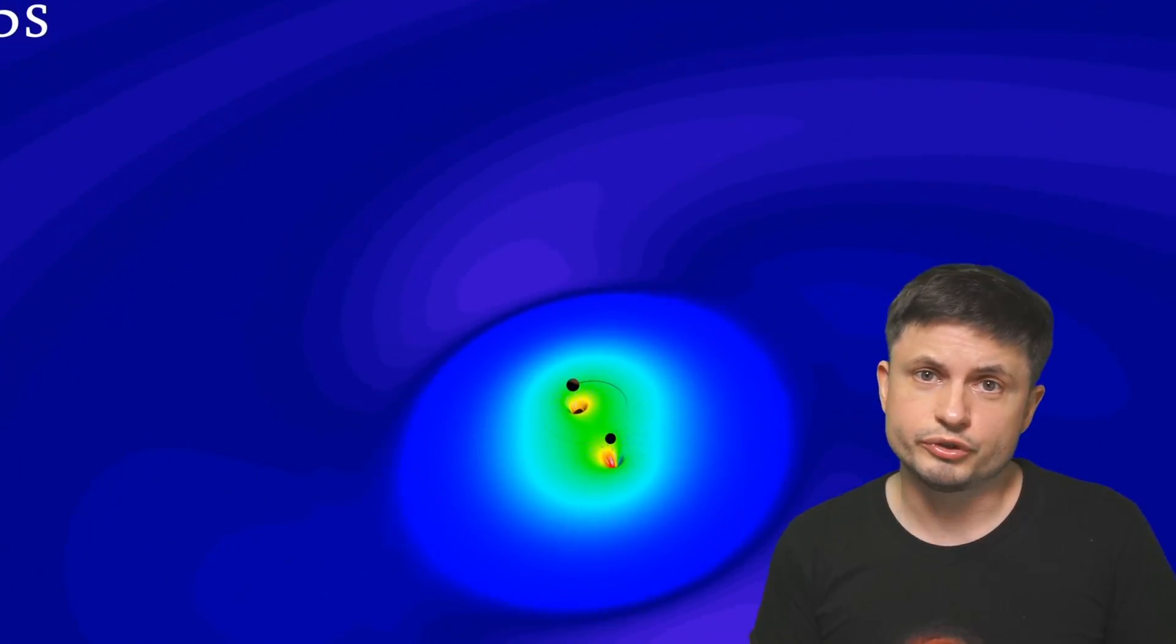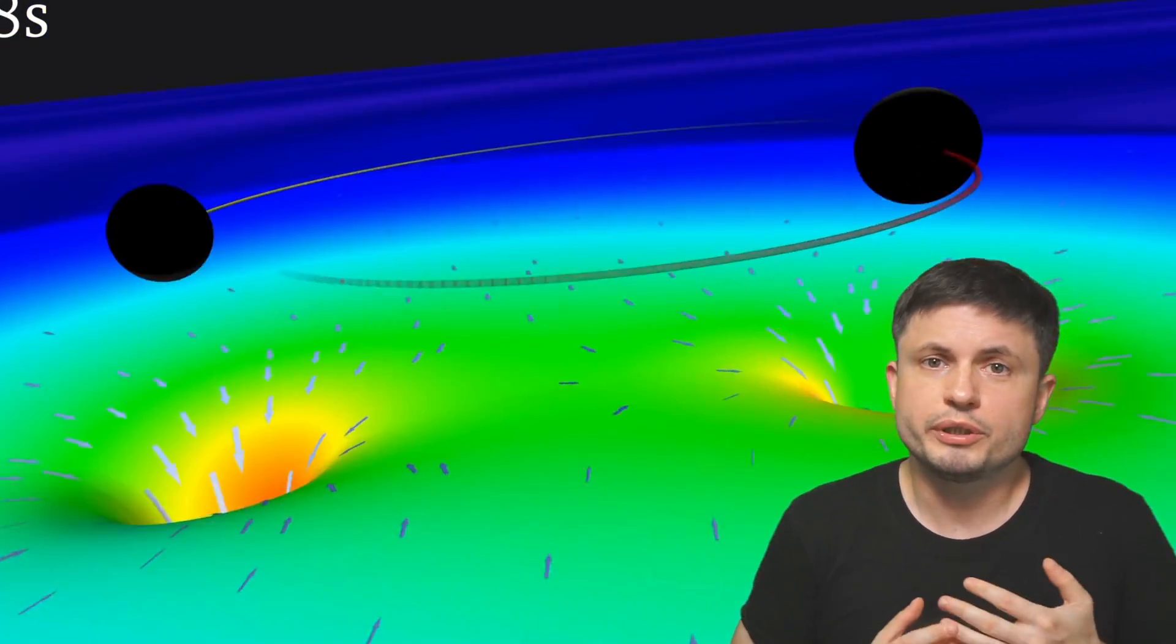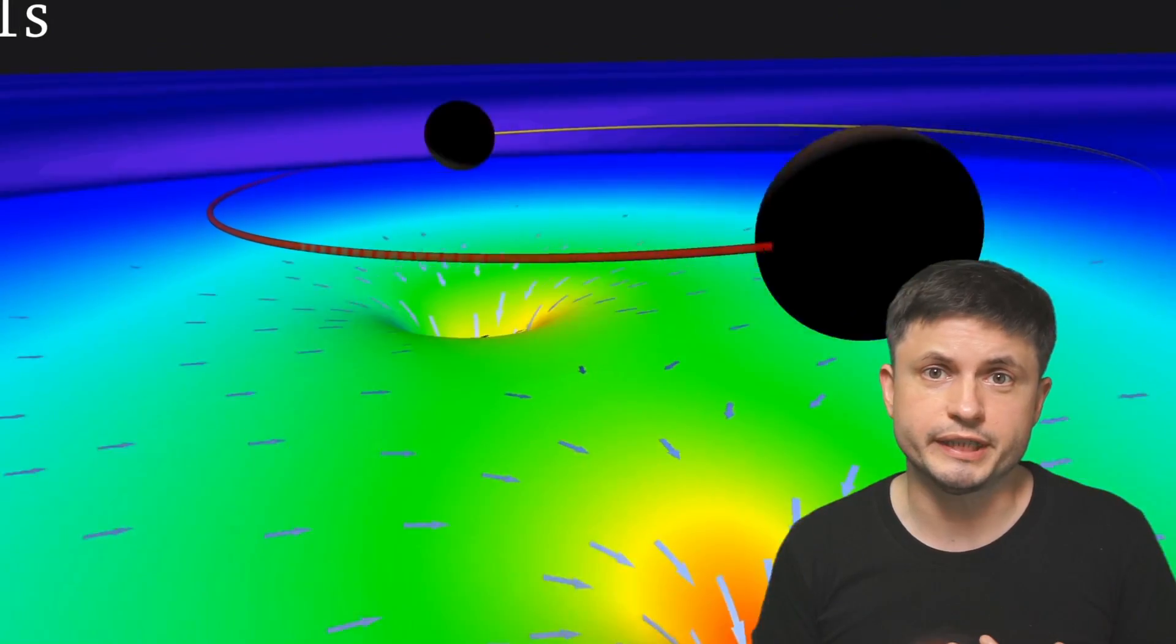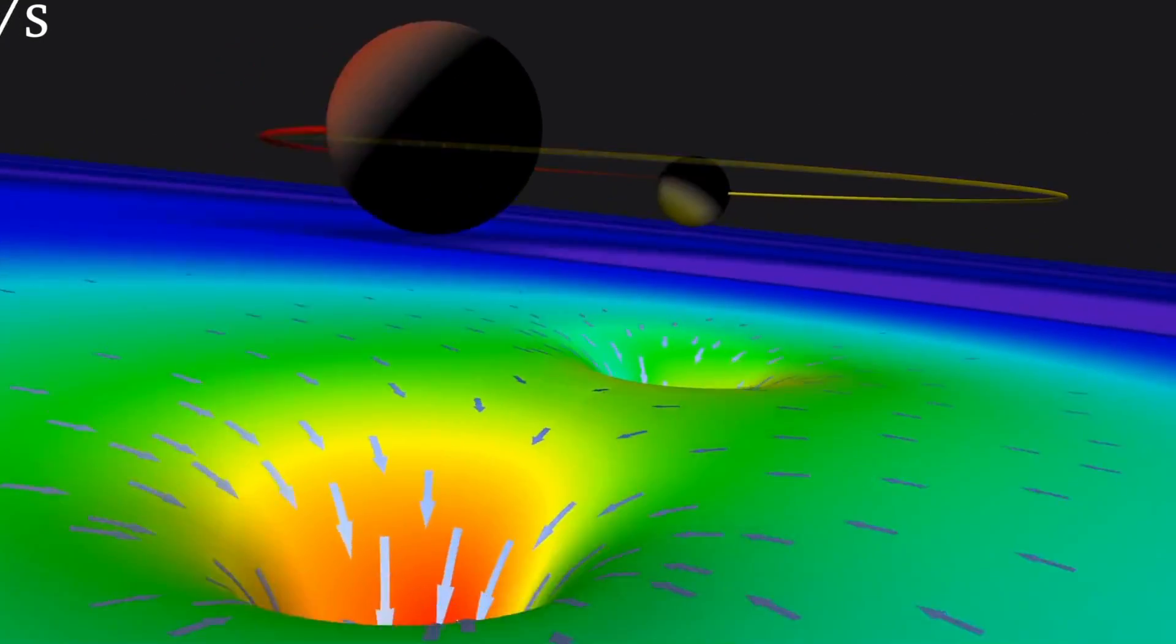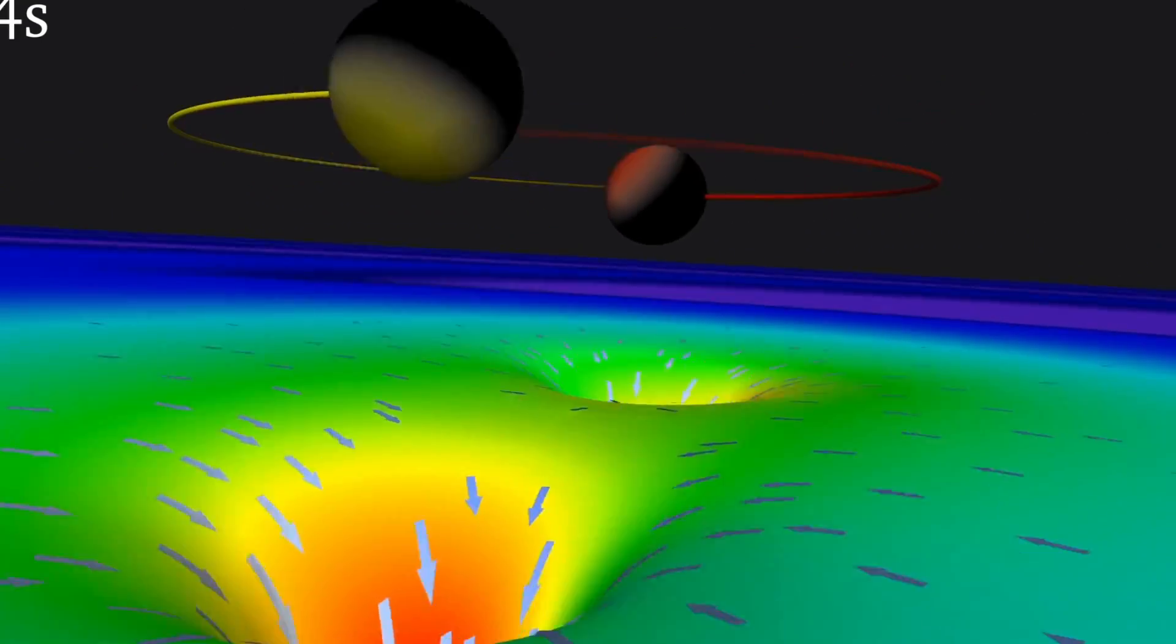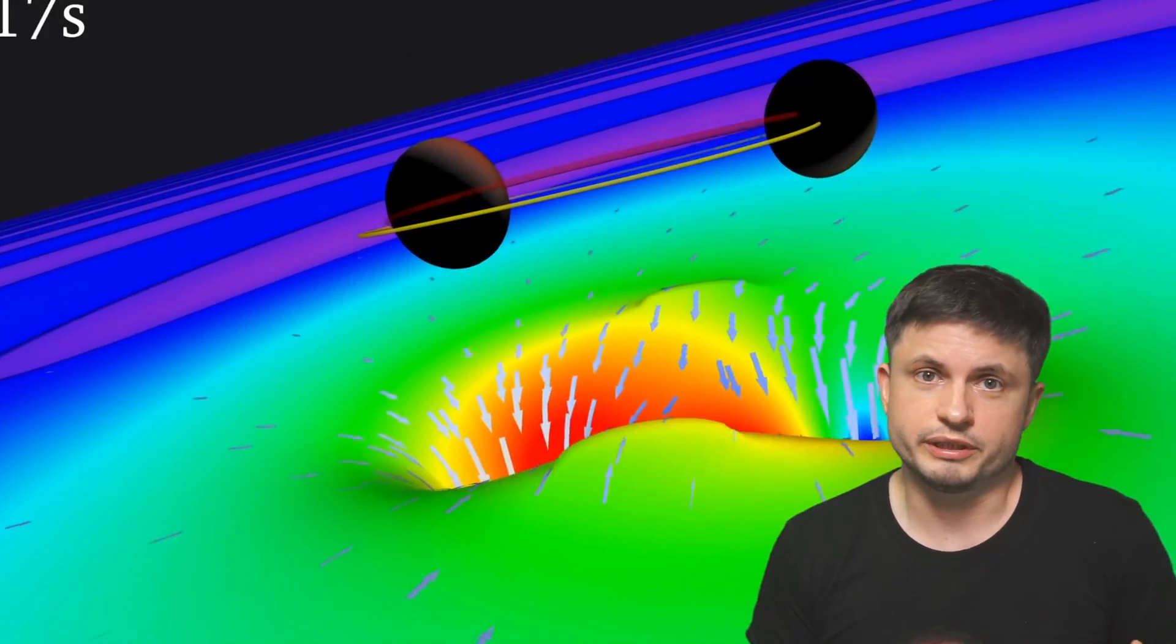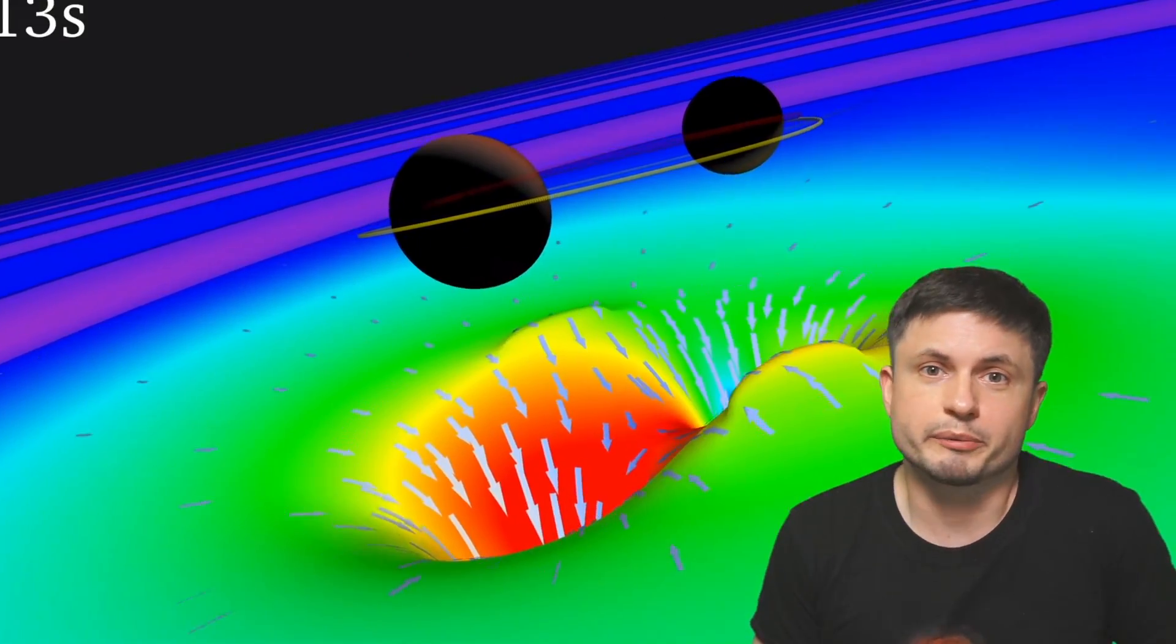Now as you're probably aware, the first discovery from LIGO was back in 2015. During its first run between 2015 and 2016, the scientists back then only discovered three black hole collisions. Obviously back then this was a huge discovery, but today, only six years later, we're no longer impressed by this.